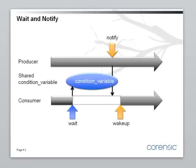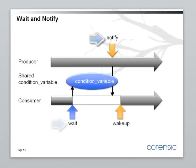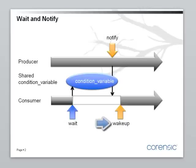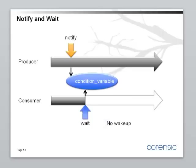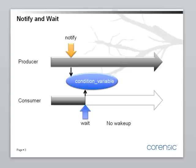Here's a diagram that illustrates the idea of a condition variable. A condition variable is an object that is shared between two or more threads. Here we have a producer thread and a consumer thread. The producer calls the notify method and the consumer calls the wait method. If wait is called first, then the producer calls notify, which wakes the consumer up and the consumer continues. If the order is reversed and the producer calls notify first, then the consumer calls wait, the notification is lost. It means that the condition variable does not have memory — it doesn't have a state, it does not remember that notify has already been called.